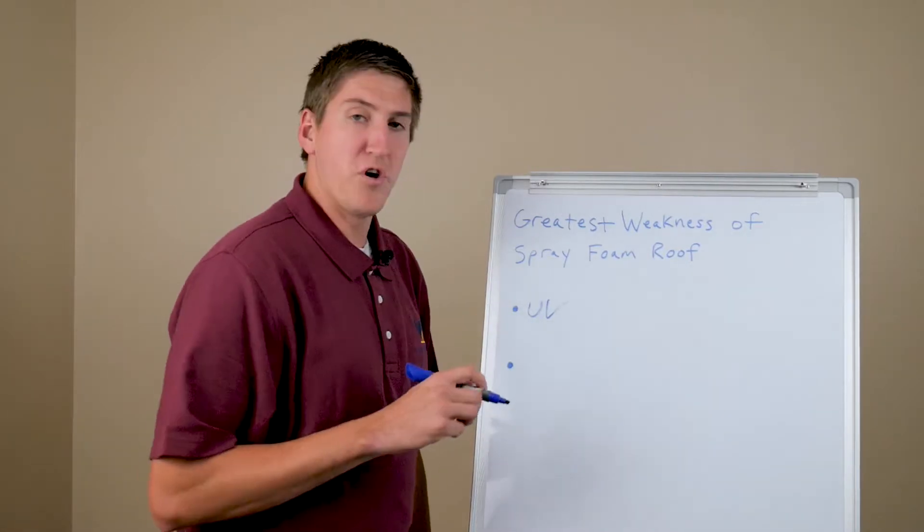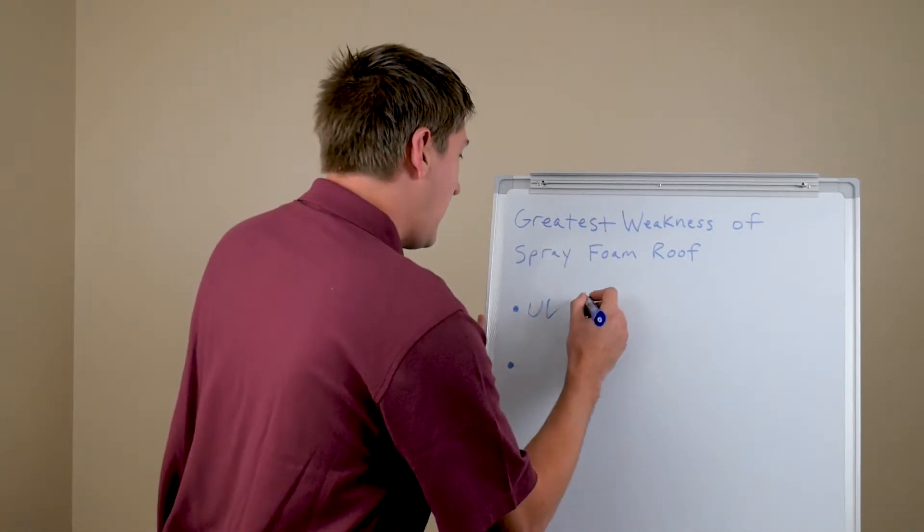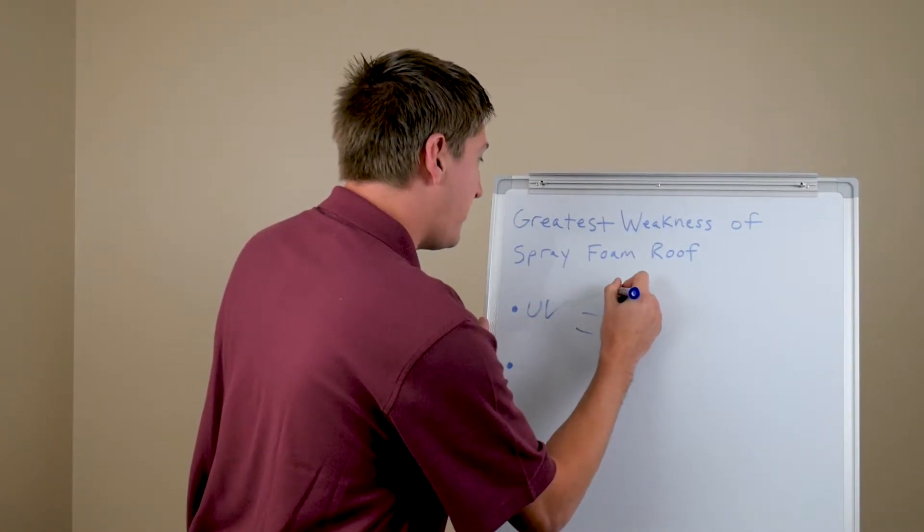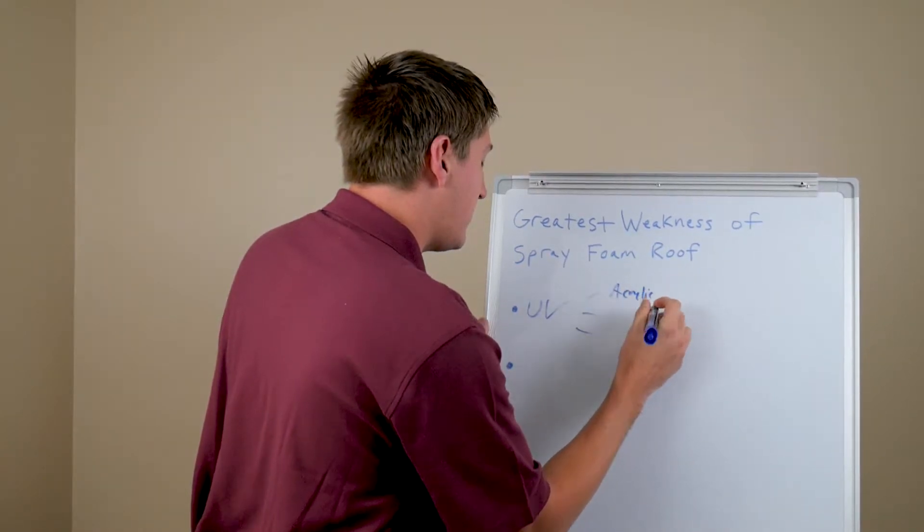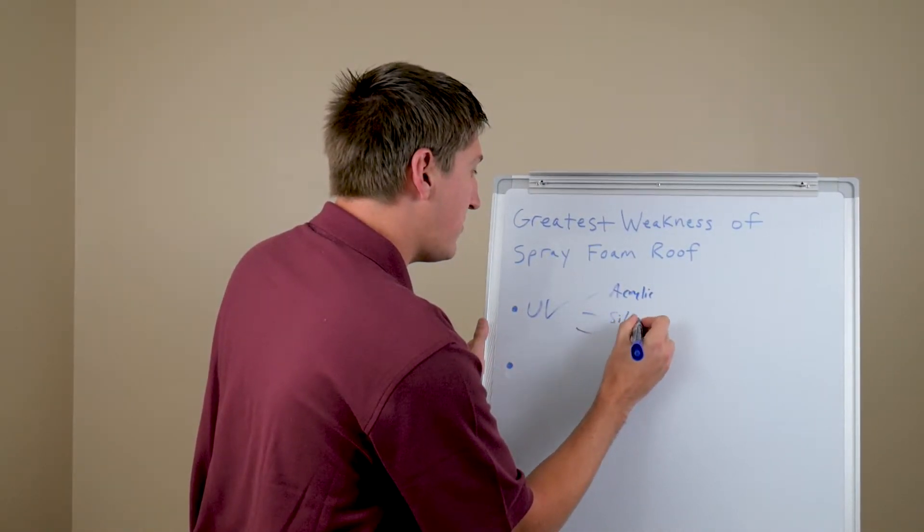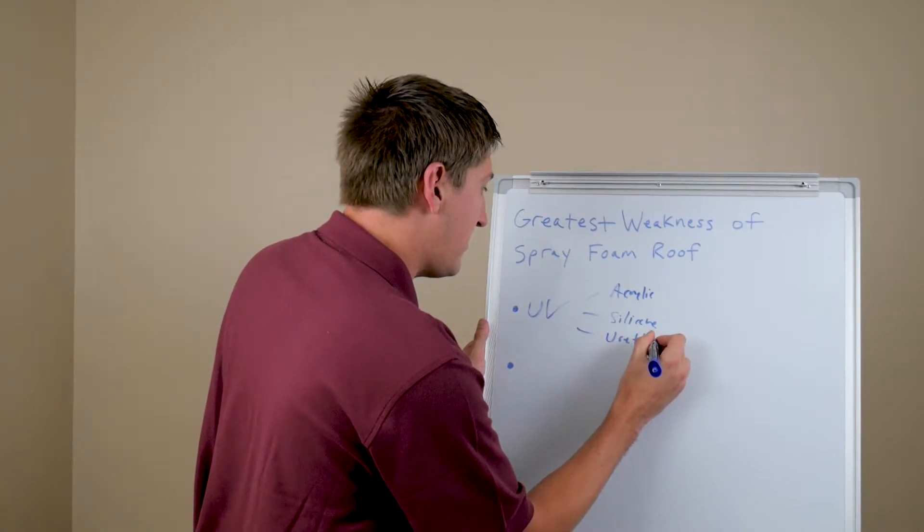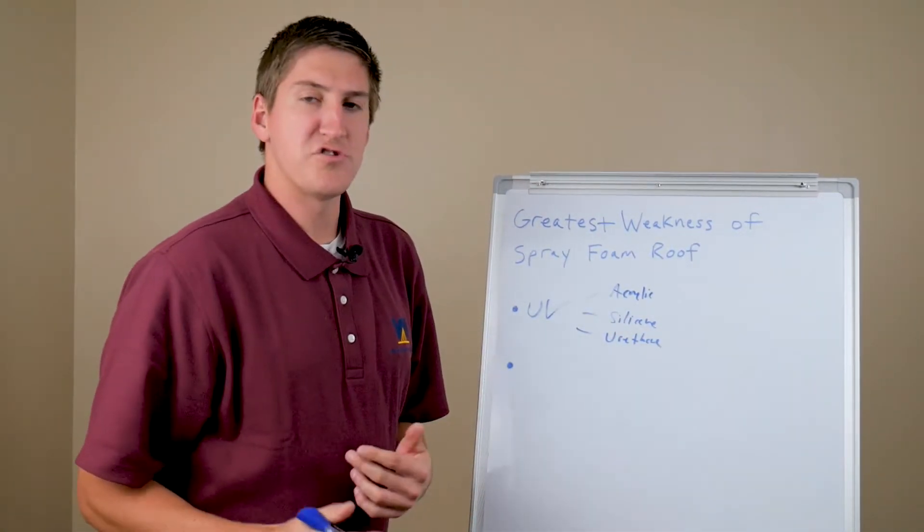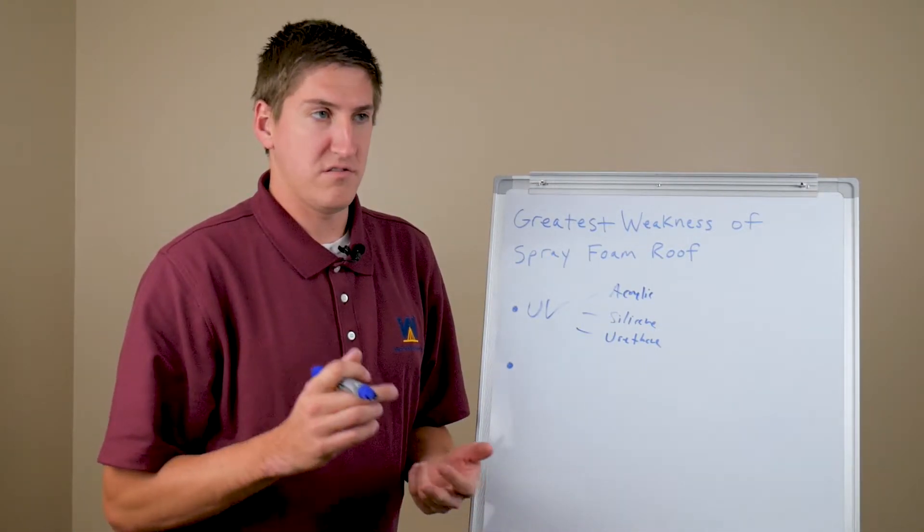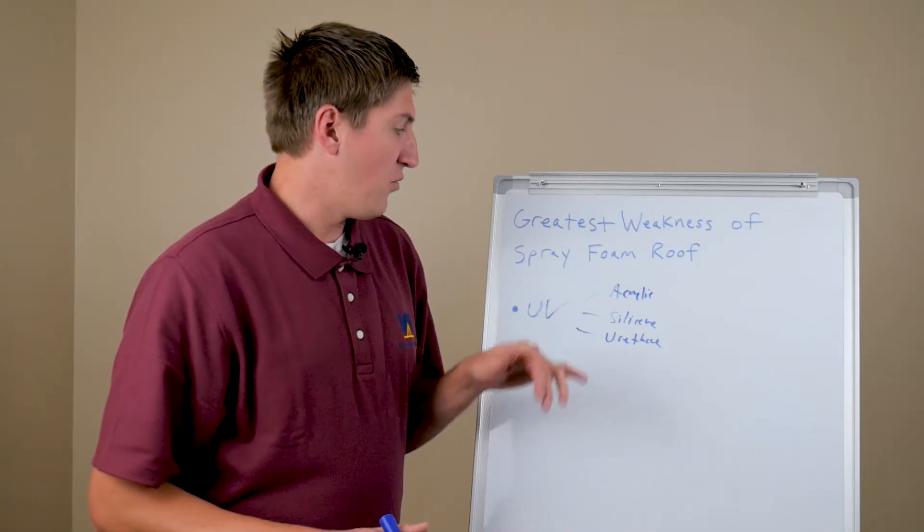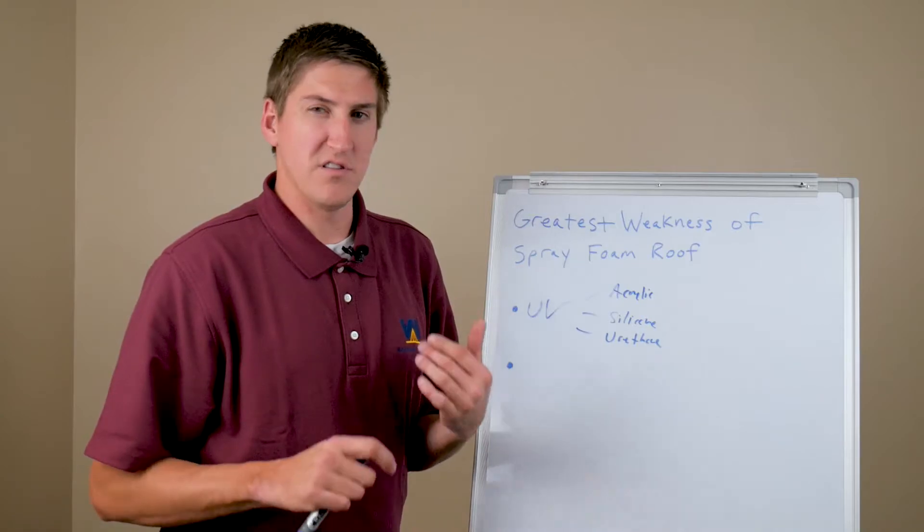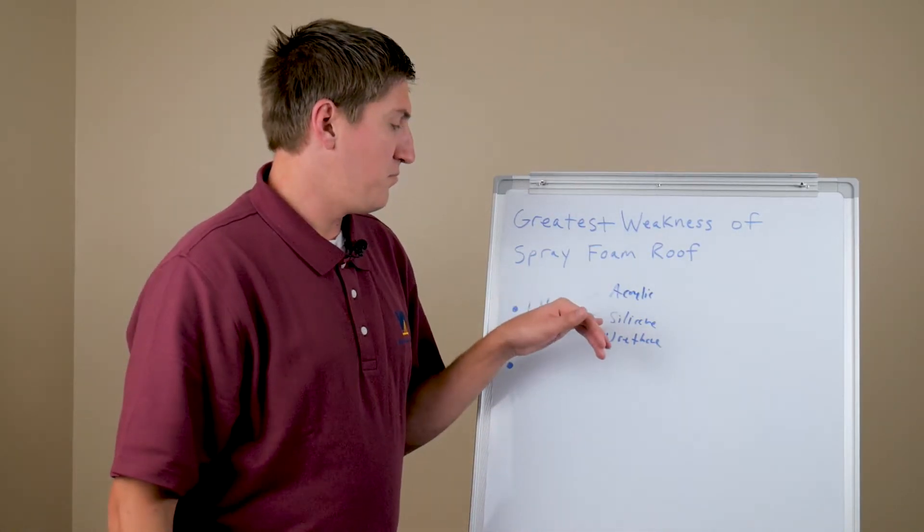So there's three roof coatings you can put over top of your roof and the first one is acrylic, second one is silicone, and the last one is urethane. And depending on which area of the country you live in and the humidity, the dryness, depending on which one you're going to put over top. So us here on the East Coast, we mainly use silicone.